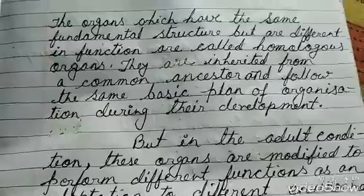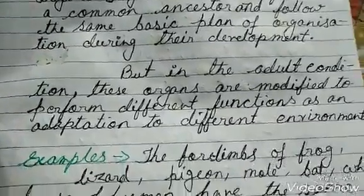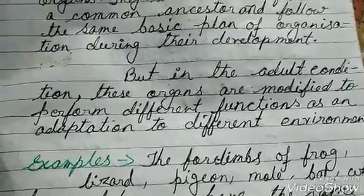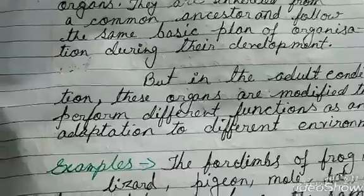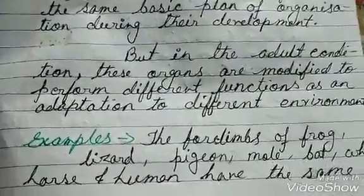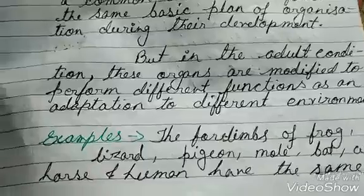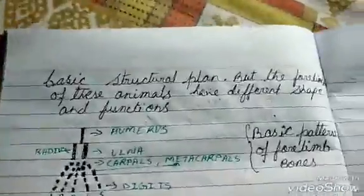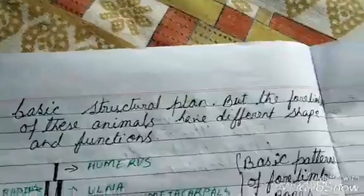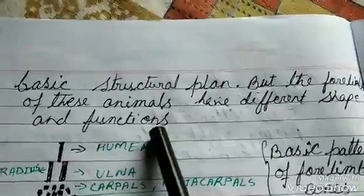There are a few examples of homologous organs — have a look. The four limbs of frog, lizard, pigeon, mole, bat, whale, horse, and human have the same basic structural plan, but the four limbs of these animals have different shapes and functions.